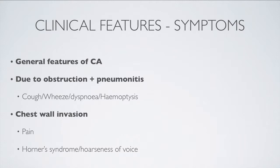Let's now talk about the clinical features of lung cancer, i.e. the symptoms and the signs. Starting with symptoms, a patient may present with general features of a carcinoma such as fatigue, weight loss, and cachexia. Otherwise, symptoms of lung cancer tend to occur because of two pathological processes. The first is the obstruction of bronchi and distal pneumonitis, and this causes cough, wheeze, shortness of breath, and sometimes even the coughing up of blood or haemoptysis.